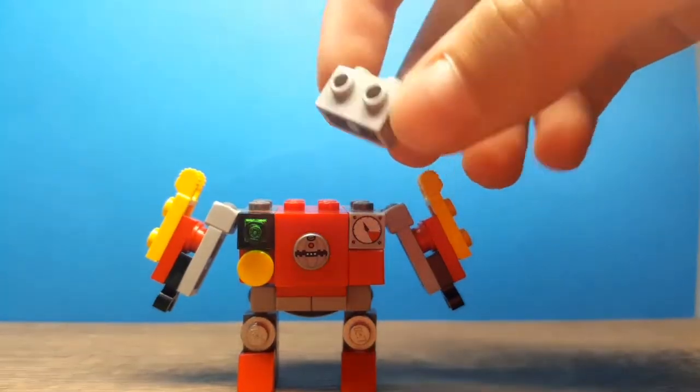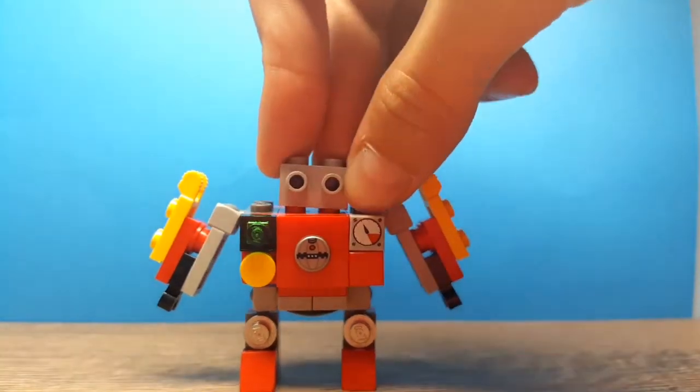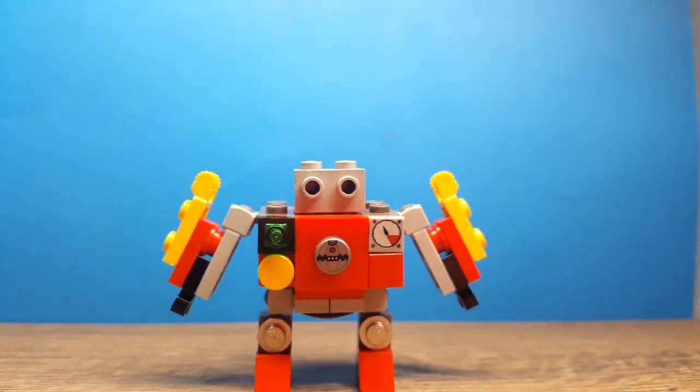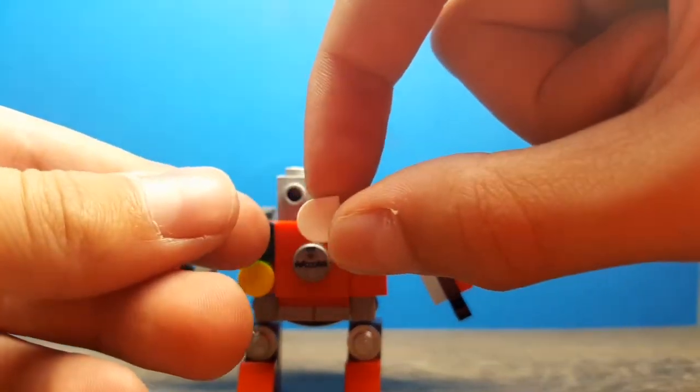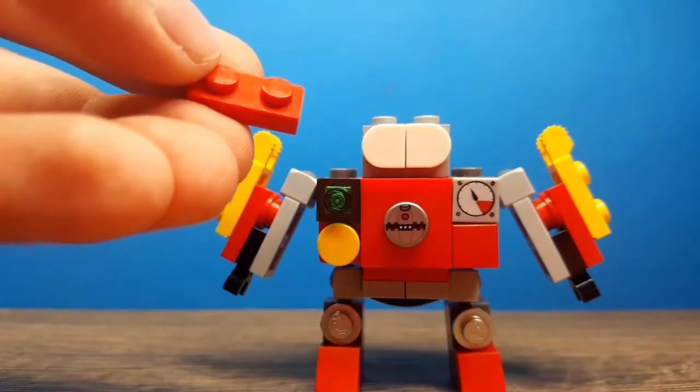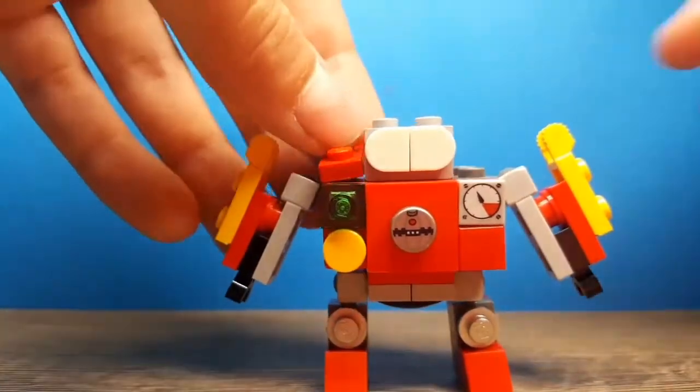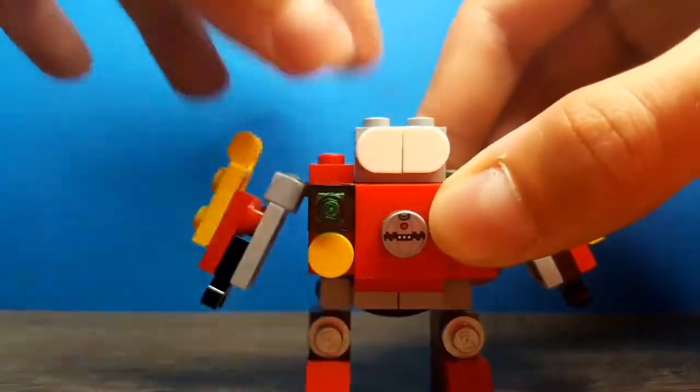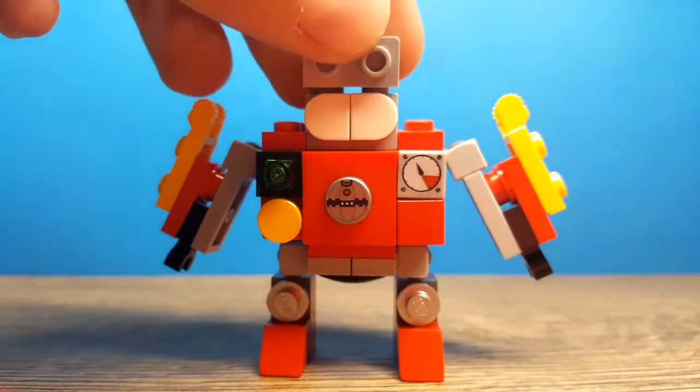Add this 1x2 brick with studs on the side. Add 2 of these pieces in white, 2 of them on this brick. Add 2 of these 1x2 red plates on either side just like this, on top of this brick.